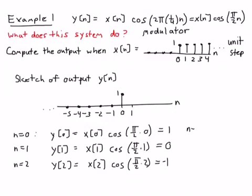Similarly, at n equal 3, we can show y[3] is going to be, well, let's see, what will it be? It'll be x[3] times cosine of 3π over 2, which obviously cosine 3π over 2 is 0, so that's 0.